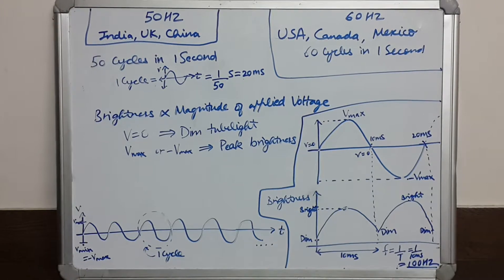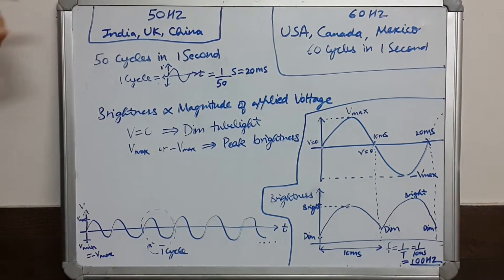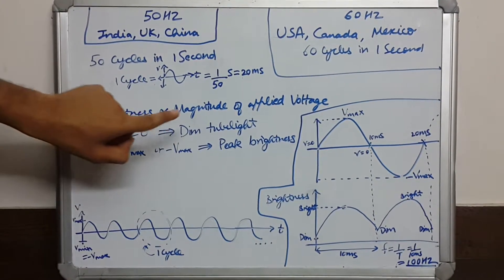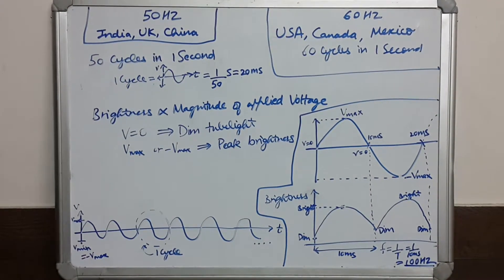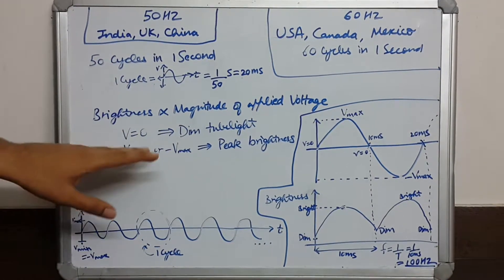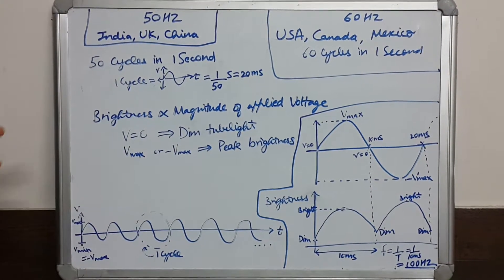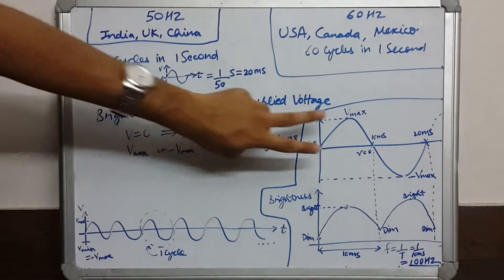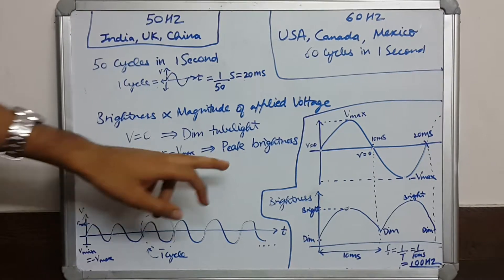The tubelight is connected to the mains directly and its brightness is directly proportional to the magnitude of the applied voltage. When V is equal to zero we have a dim tubelight, and when we have Vmax or minus Vmax — that is, the magnitude of the voltage is maximum — we have peak brightness.